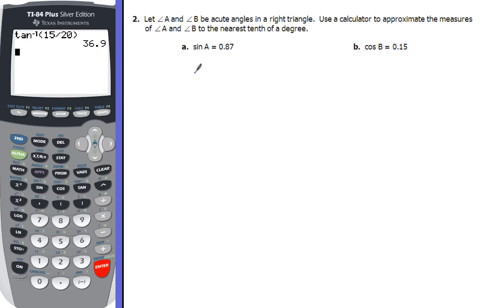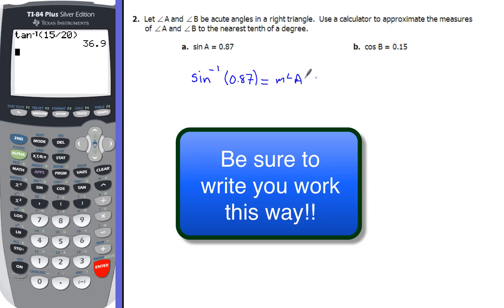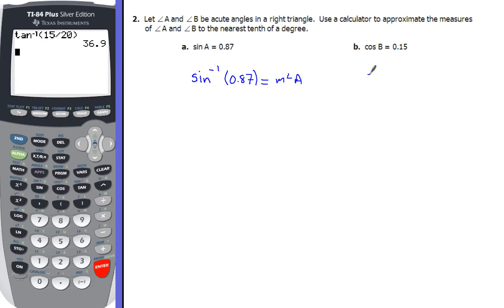Now for sine of A equaling 0.87, you're going to write sine^-1 of 0.87 equals the measure of angle A. Then we'll push the buttons and see what that gives us. Same thing for cosine of B. We're going to write down arc cosine or inverse cosine of 0.15. It's going to give us the measure of angle B. The next thing we'll do is we'll hit those buttons in our calculator and come up with those values. So go ahead and do that and see what you come up with.